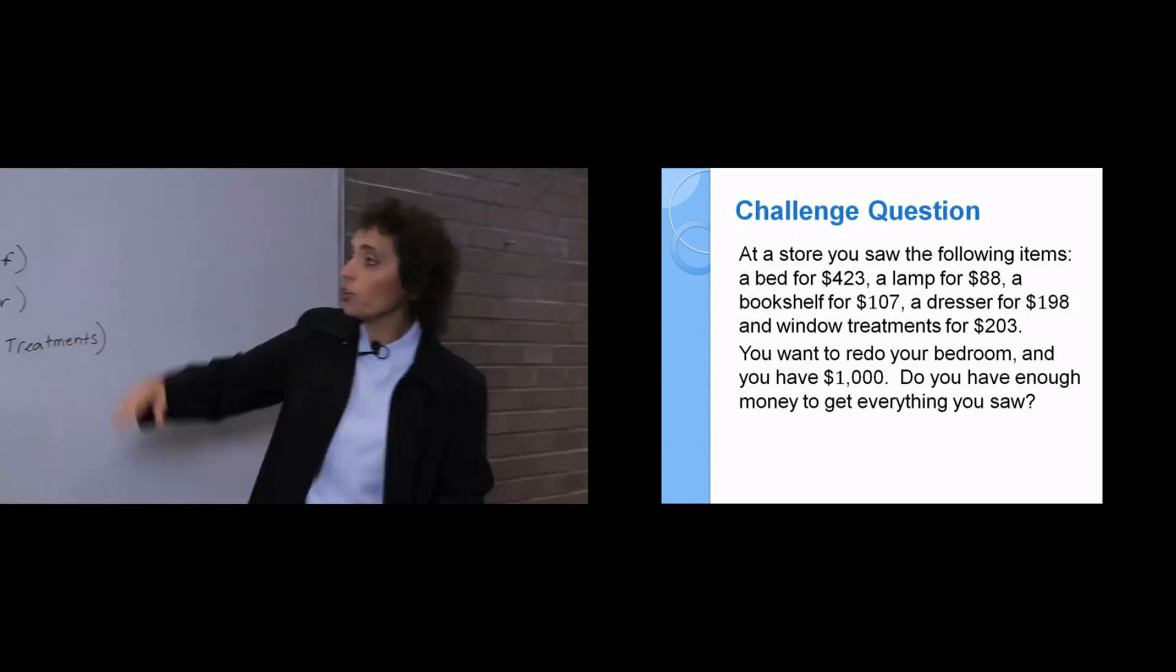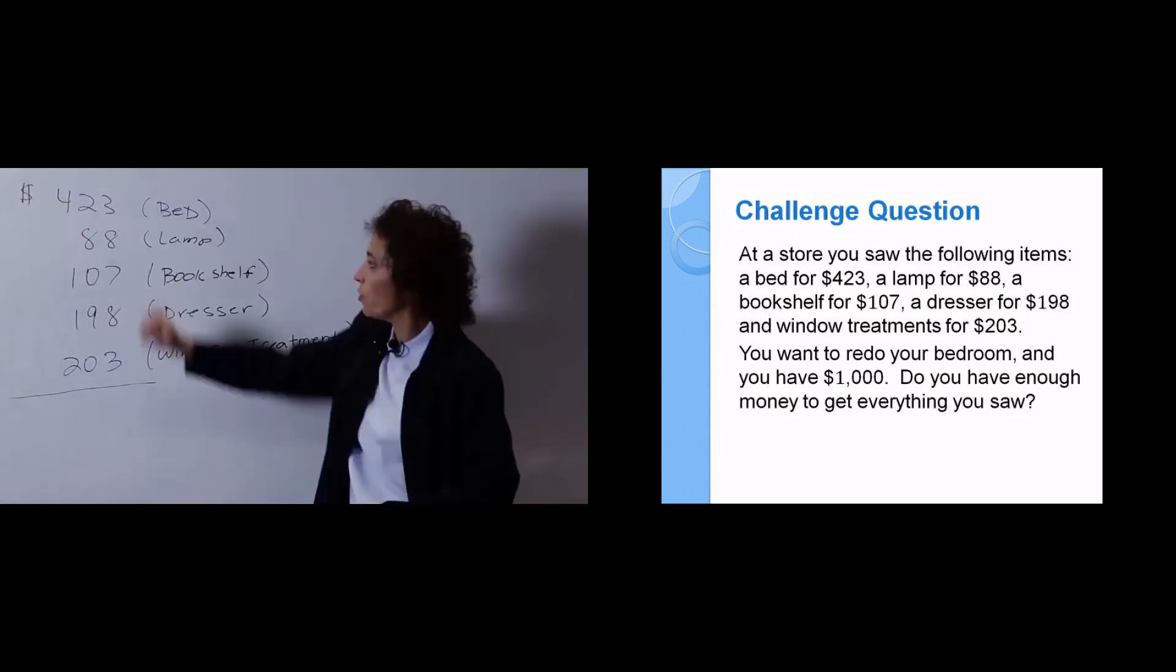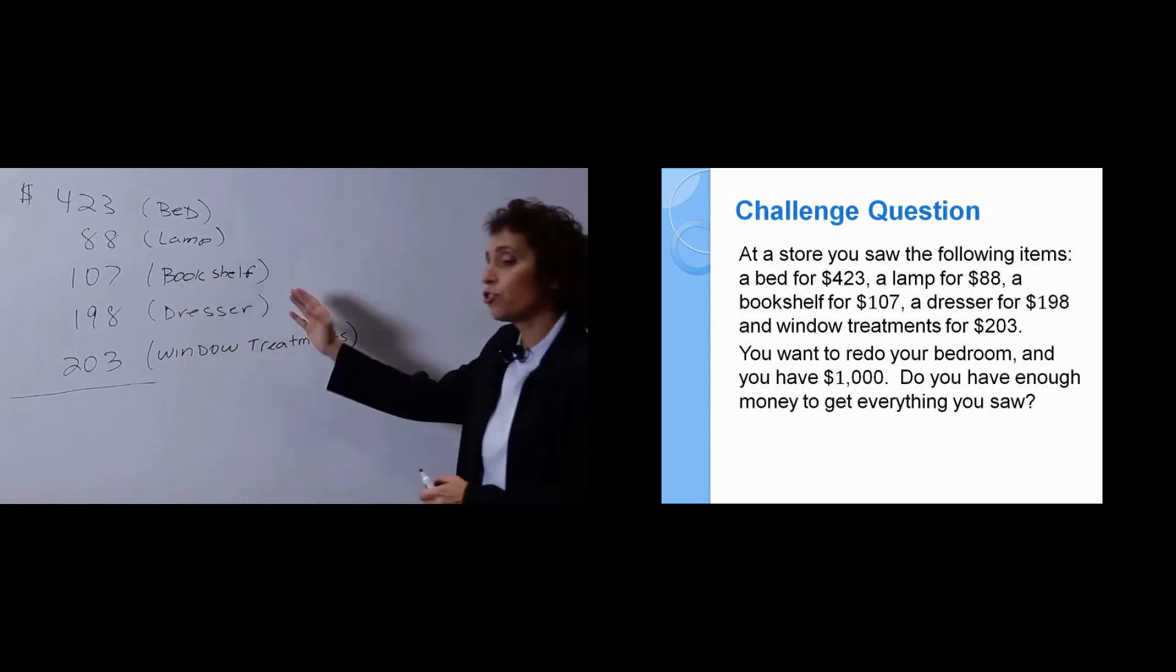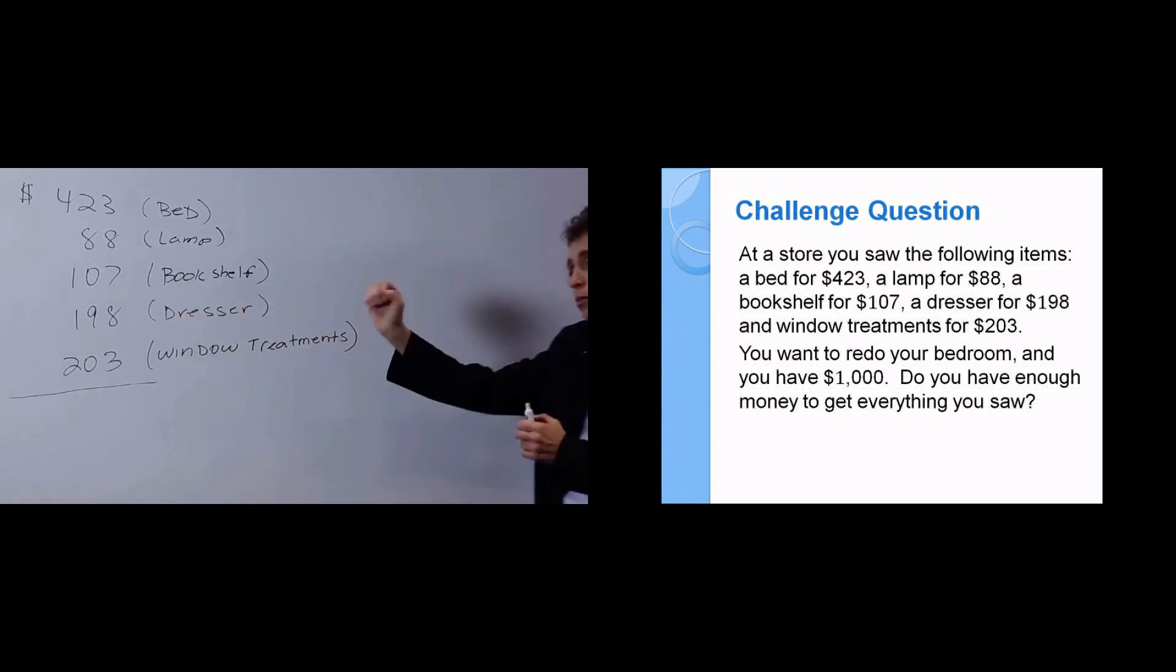Let's say you want to redo your bedroom. You go to the store and find a bed for $423, a lamp for $88, a bookshelf for $107, a dresser for $198, and window treatments for $203.